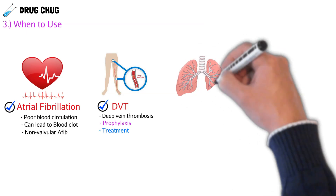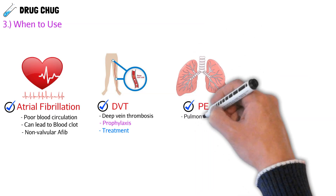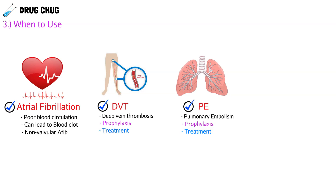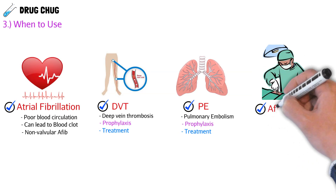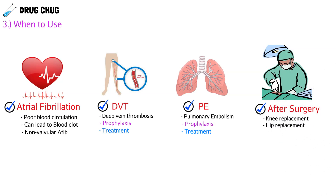The same applies to pulmonary embolism — a blood clot traveling to the lungs, which is a very serious condition. Again, we have a prophylaxis dose for patients at risk and a treatment dose for patients who have a blood clot right now. We can also use these drugs after surgery, such as knee or hip replacement surgery, to prevent blood clots from forming during recovery due to the stress surgery places on the body.